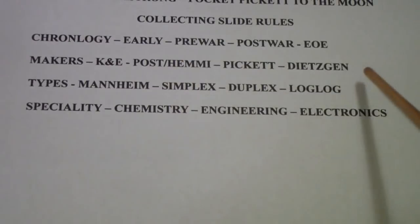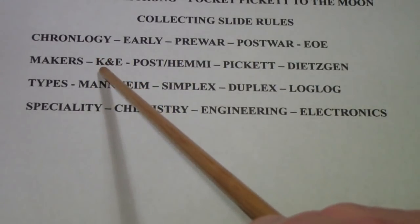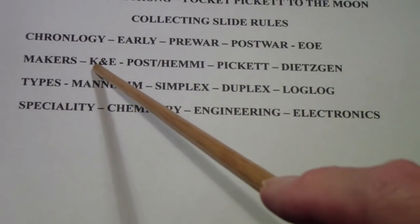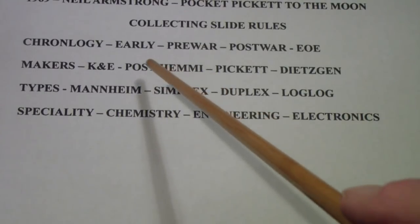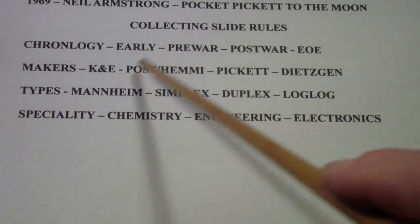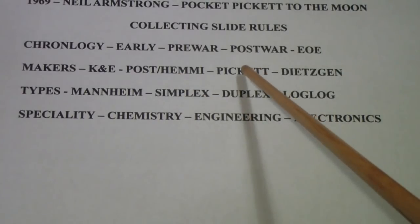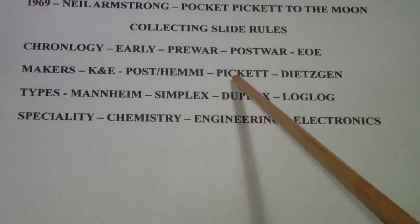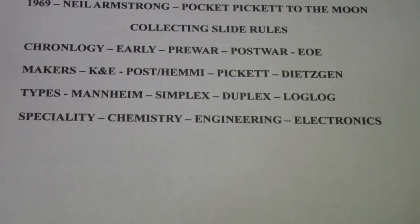The makers that I have collected over the years include K&E, Keuffel and Esser, Post, which is actually a slide rule made by Hemmi in Japan, and I also have some Hemmi slide rules as well, Pickett I mentioned earlier, that's the make of the slide rule that Neil Armstrong carried, and then Dietzgen, and Dietzgen is actually my favorite for reasons that I may talk about at the end.